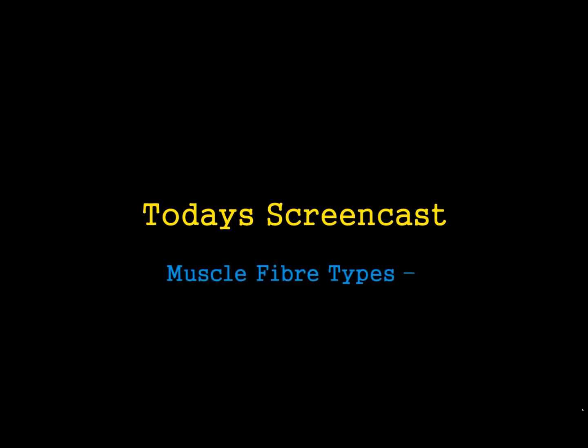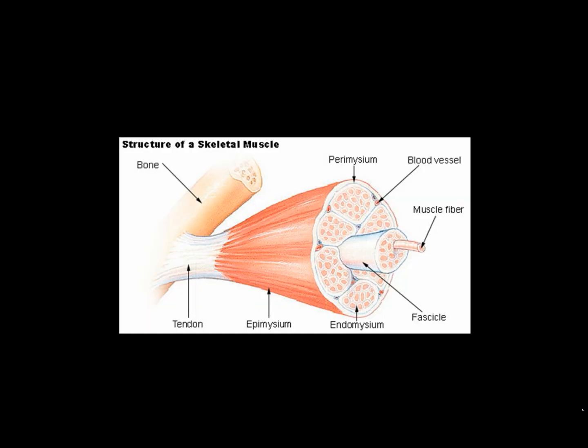Today's screencast is going to discuss not only muscle fibre types, but importantly their structure and function, and linking those two together. That's really important for understanding how to write at merit and distinction level. In a skeletal muscle you have a structure that looks something like this. The skeletal muscle is broken down into bundles, and then these are slowly broken down further until eventually you have what's called the muscle fibre. These little strands are what make up your skeletal muscle.